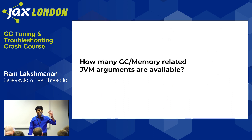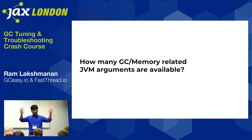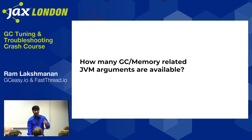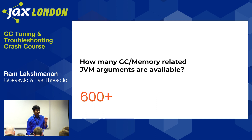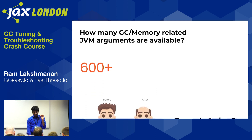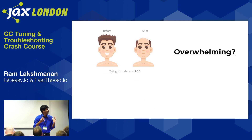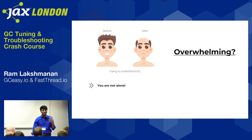Do you know how many GC or memory-related JVM arguments you can pass to your JVM? The answer is 600 plus arguments. When you try to understand garbage collection and all these arguments, it's going to be a little bit overwhelming. It's not fair for an engineer to understand all these different algorithms and what arguments you can pass. It's really overwhelming — beyond comprehension.